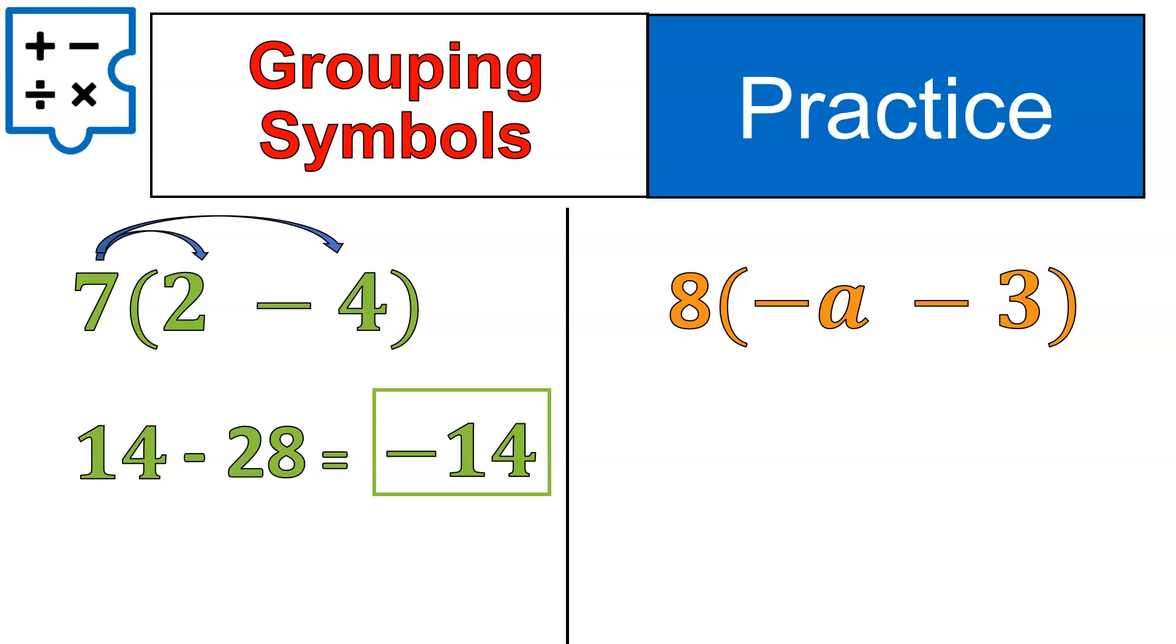Again, if you wanted to simply simplify the things inside the grouping symbols, you would have 2 minus 4 equals negative 2, and 7 times negative 2 would give you negative 14. So you can double check your work there.